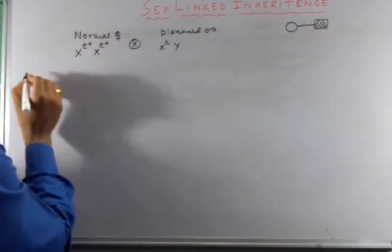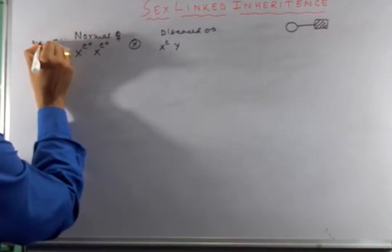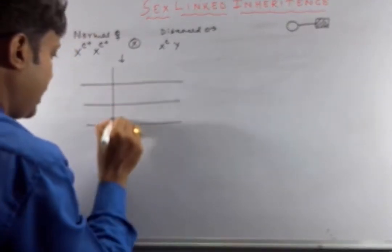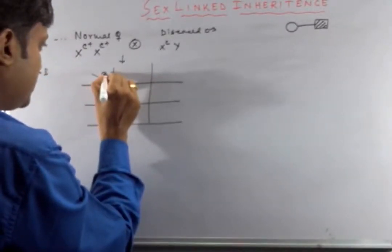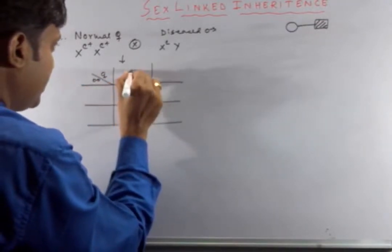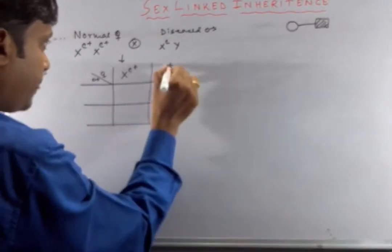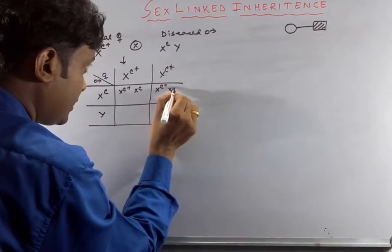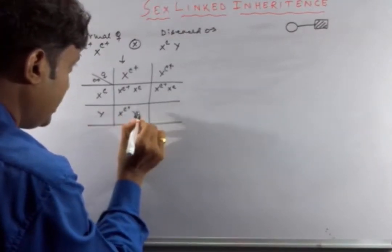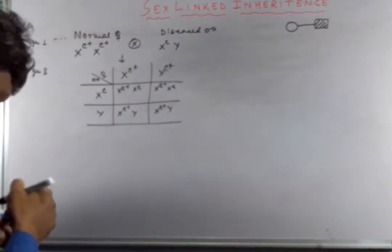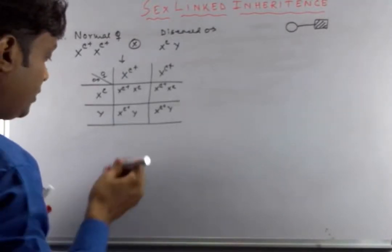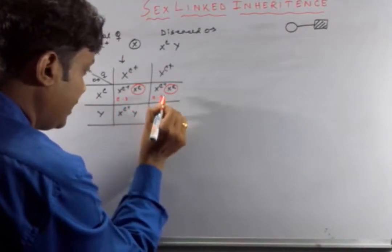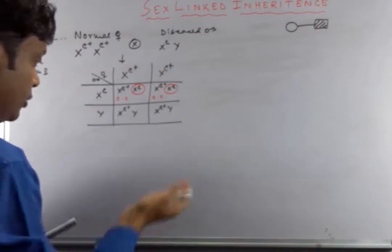Drawing a checkerboard for Generation 1 (normal female Xc⁺Xc⁺ × diseased male XcY): the offspring will be Xc⁺Xc (carrier daughter), Xc⁺Xc (carrier daughter), Xc⁺Y (normal male), and Xc⁺Y (normal male). So the defective gene is passed only to daughters. All male children are normal, but the female children get the defective gene from their diseased father and are therefore carriers.